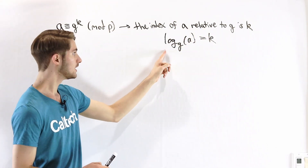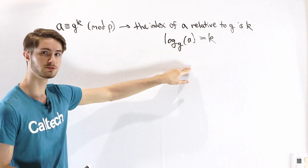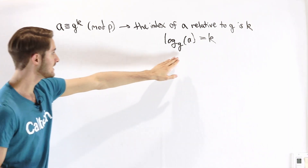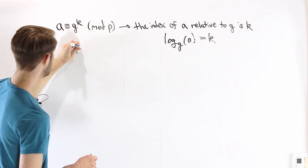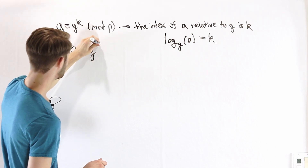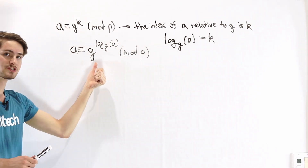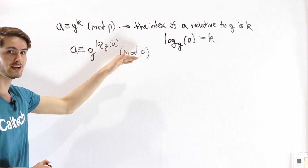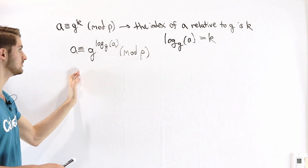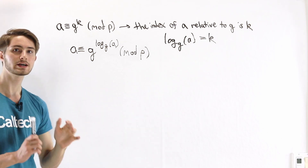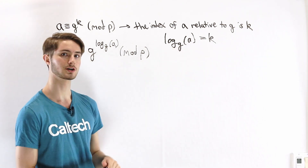The reason that we use the notation log base g of a equals k, where k is our index, is that it follows the same structure that we expect of logarithms. If we take this notation, log base g of a, and put it into this congruence, what we get is: a is congruent to g to the power of log base g of a, mod p. This is exactly what we expect from a logarithm — it inverts the idea of exponentiation. Because both standard logarithms and indices relate to taking exponents of a particular base, they actually share many of the same properties, so indices will often behave similarly to the way you'd expect a logarithm to behave.